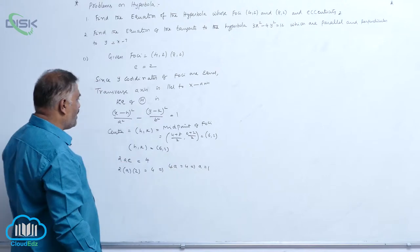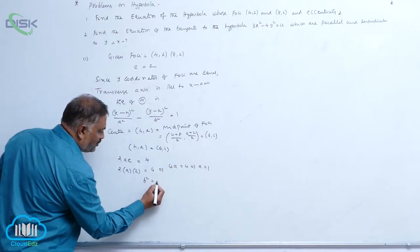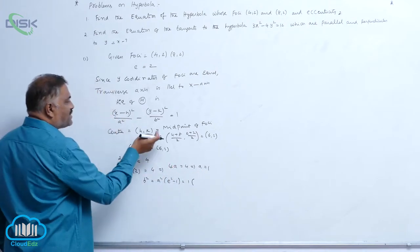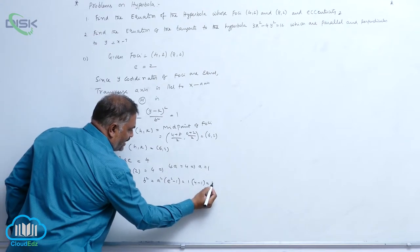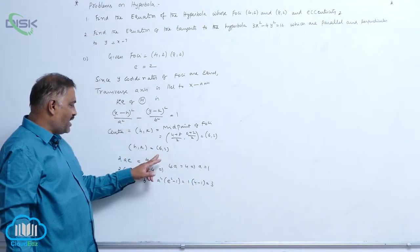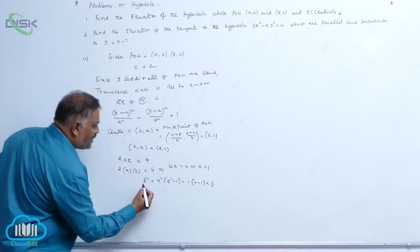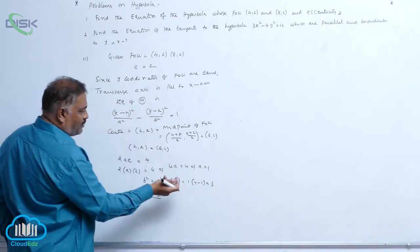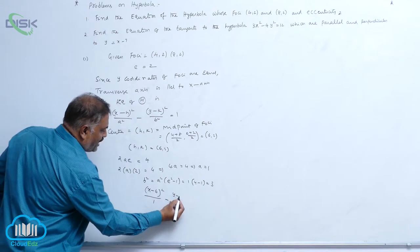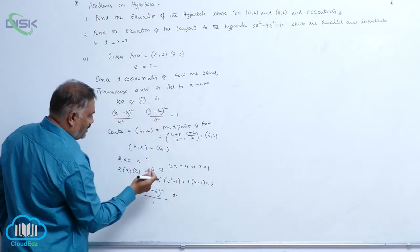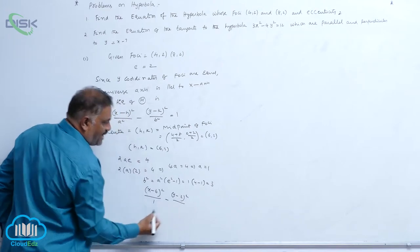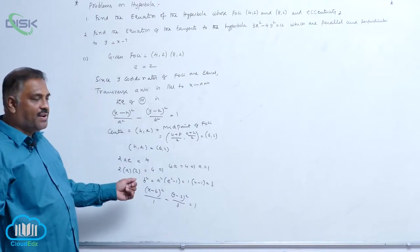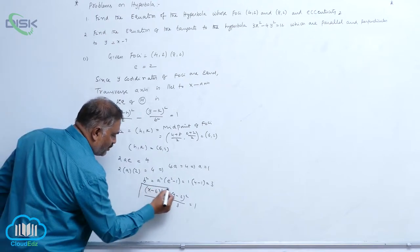Once we know a = 1, we require b² = a²(e² − 1). So a² = 1, e² = 4, giving b² = 1 × (4 − 1) = 3. We now have h, k, a, and b values. Directly, the equation is: (x − 6)² / 1 minus (y − 2)² / 3 = 1. This is the required equation of the hyperbola.